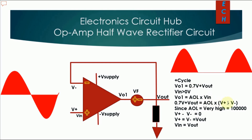Since A-OL is very high, if you divide by this term, it will approach zero, so you will have V-plus minus V-minus equals zero. Then V-plus equals V-minus equals V-out, which means V-in equals V-out. Since V-minus is connected to V-out, you will have the same input signal at the output.